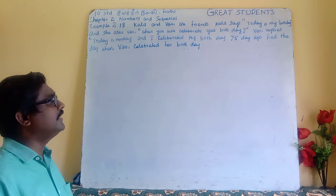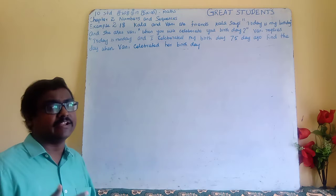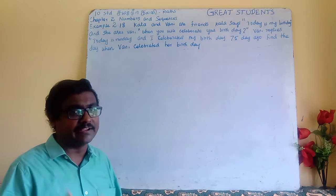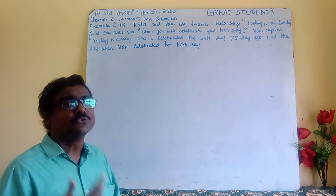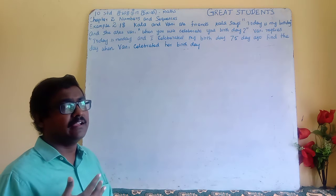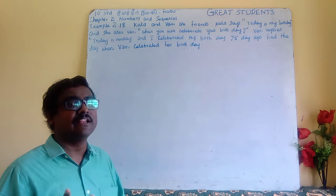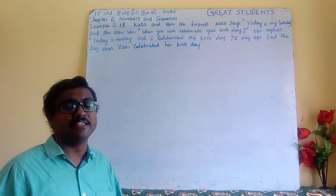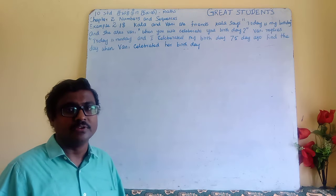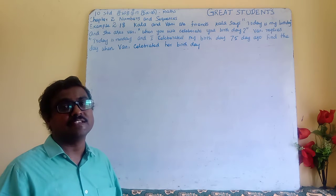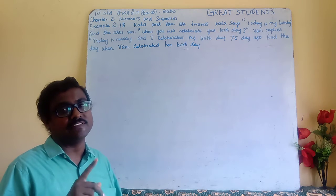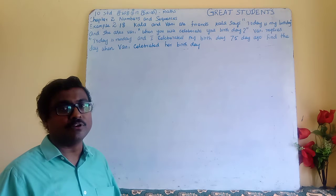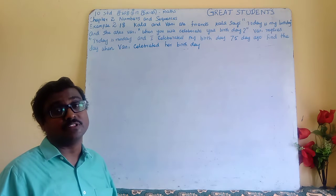This is a modular arithmetic problem. 74 days are repeated in a cycle — that is the order of this cycle. This is an introduction to the chapter on congruence modulo theory.